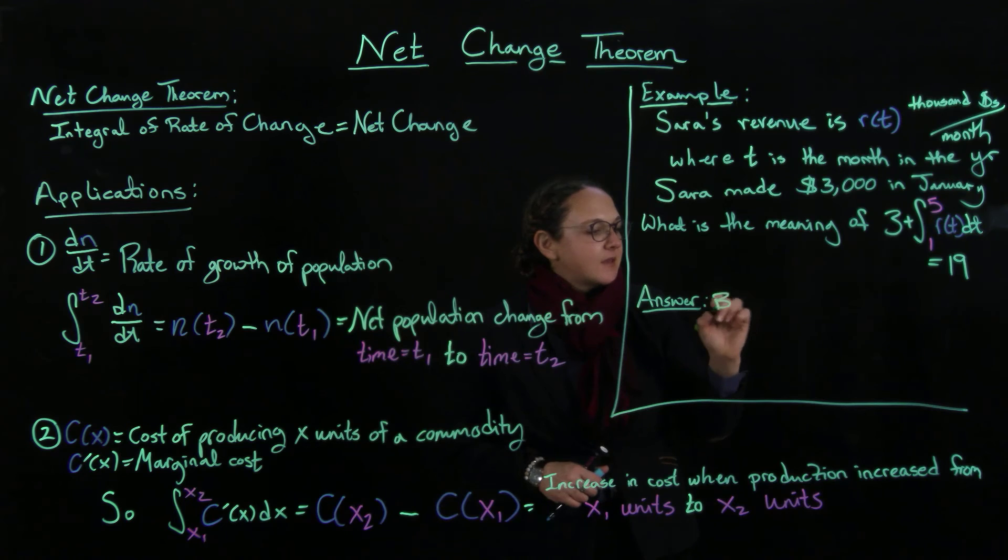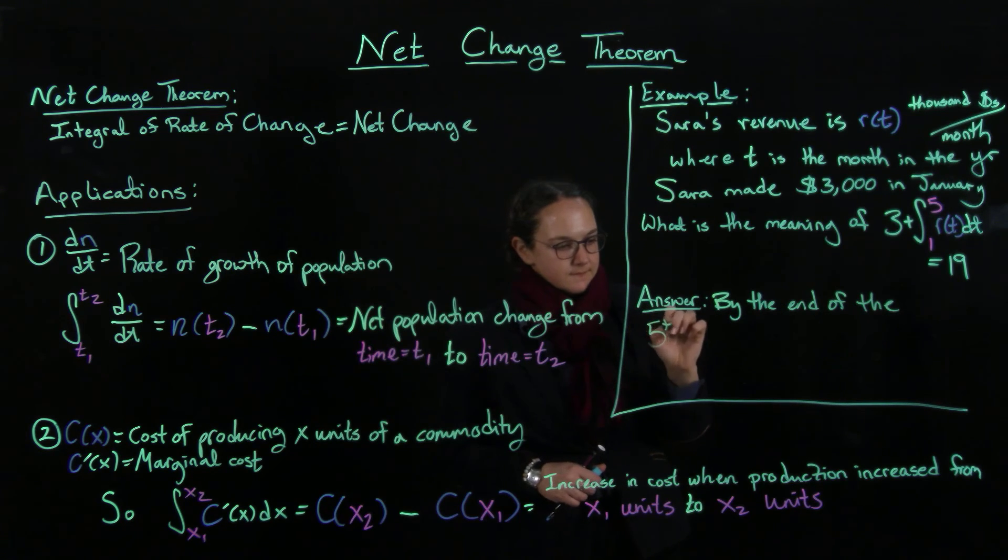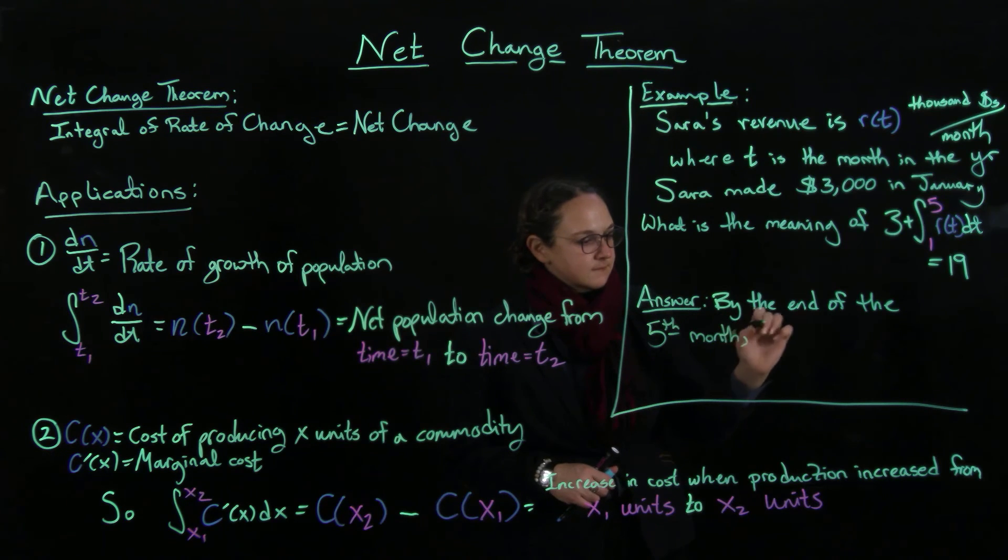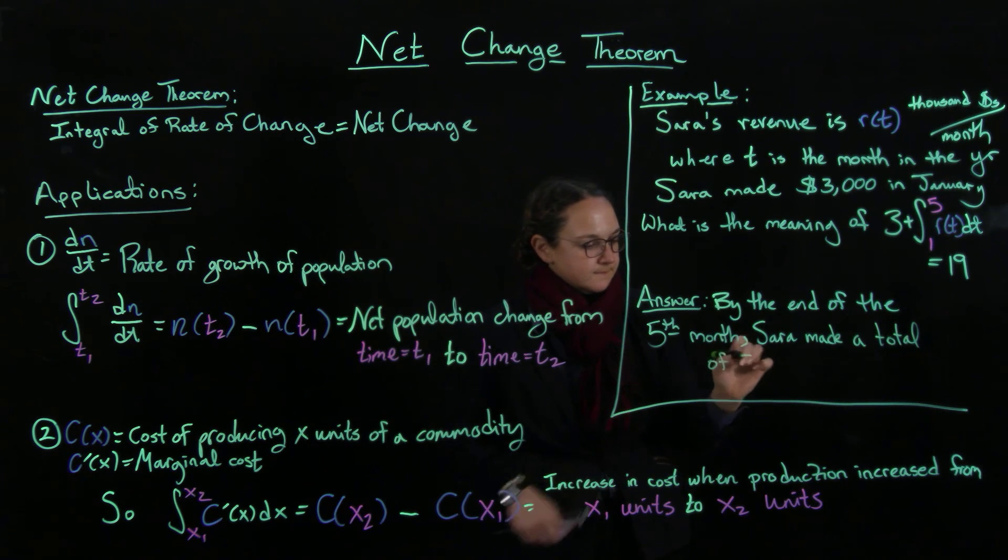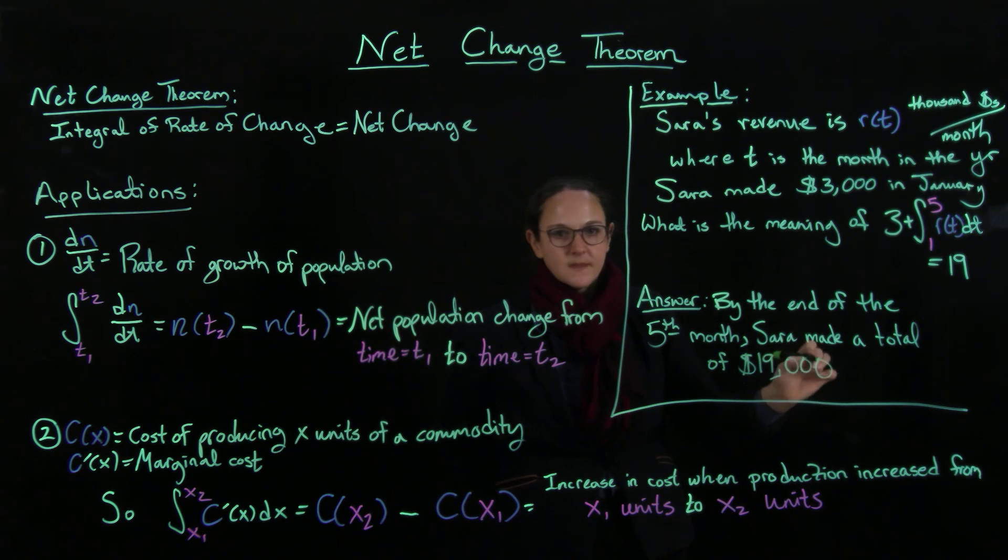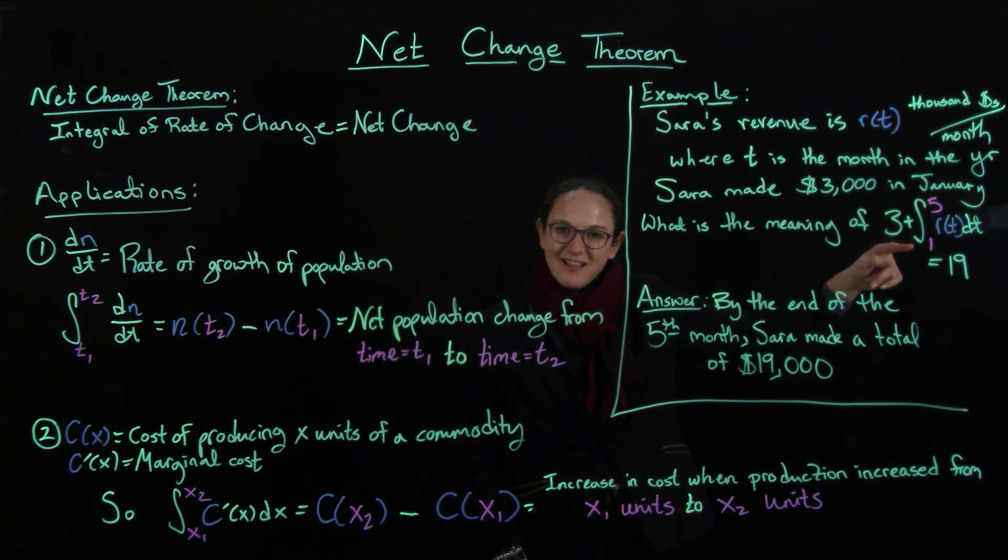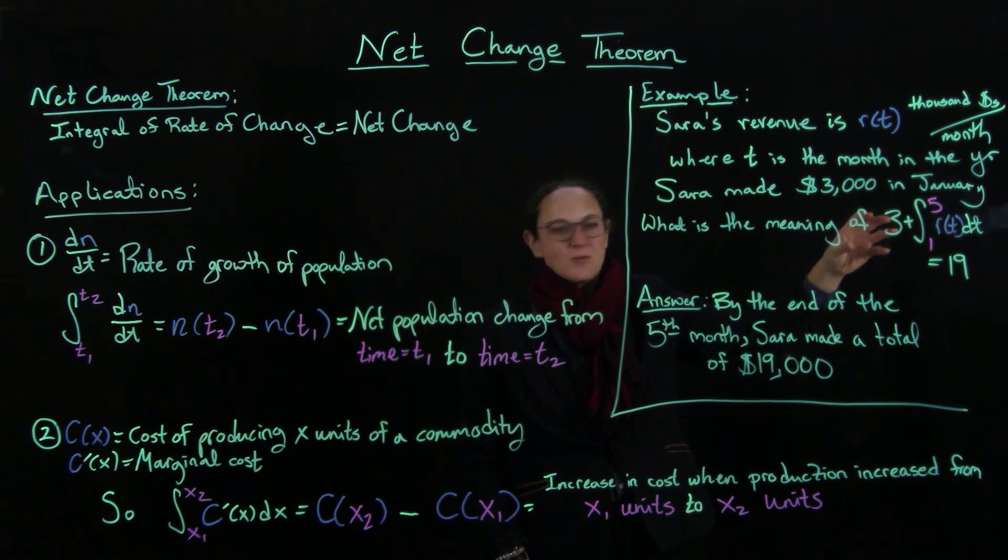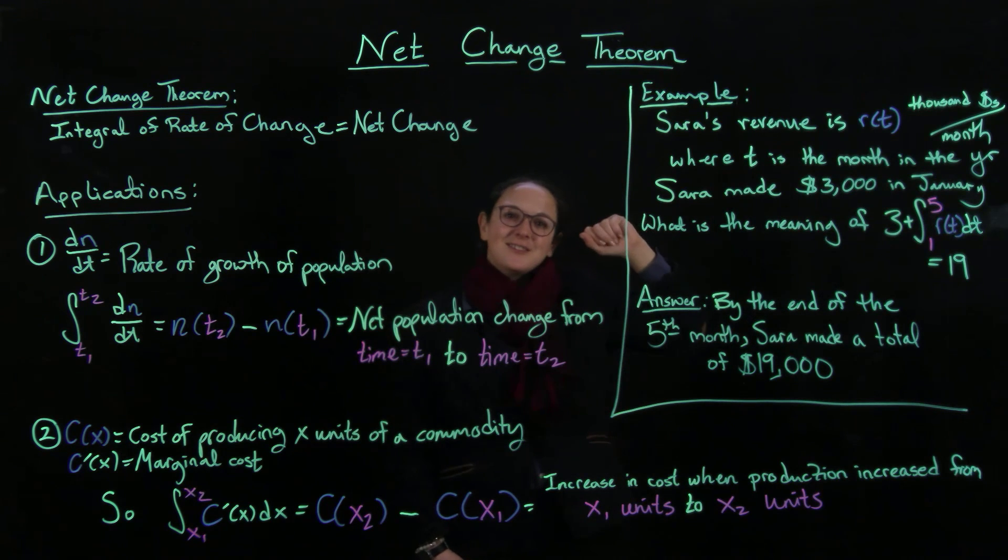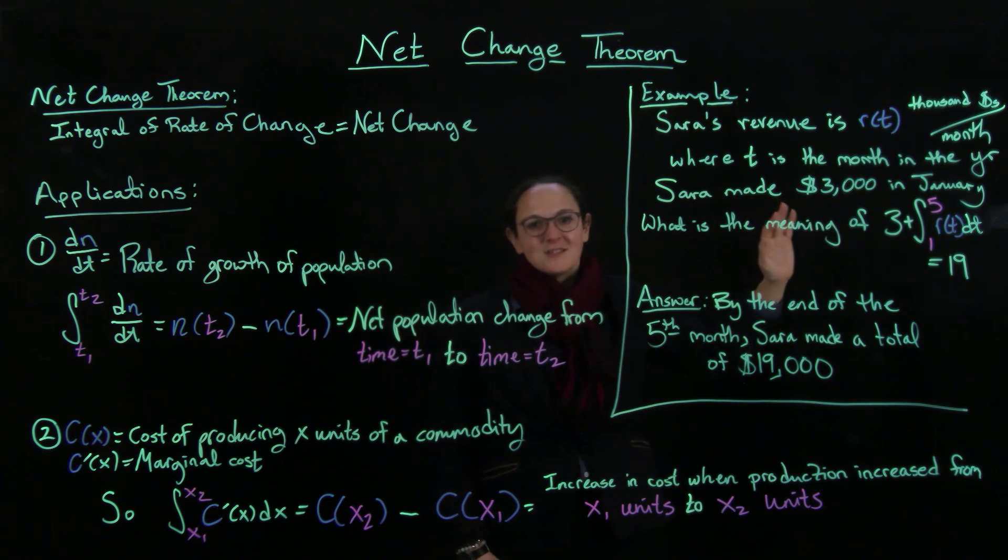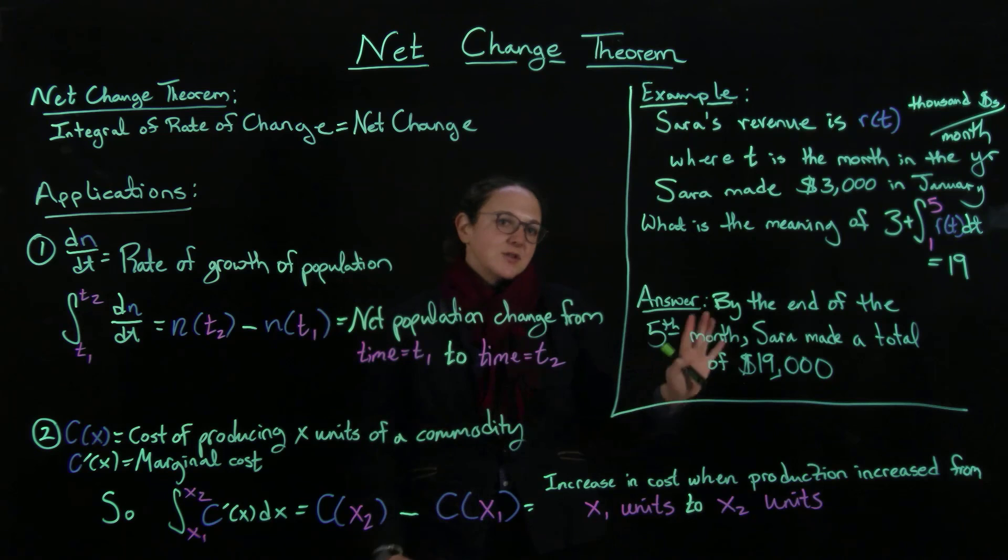Okay, so the answer is by the end of the fifth month Sarah made a total of nineteen thousand dollars. So why do we say this? Even though we started at 1, the thing was is that we encapsulated what happened in the first year. So from 0 to 1, we encapsulated that in the 3. So if you added 3 to what happened between time 1 to time 5, you're going to get 19. And this is also, I thought, I like this example because it makes you sort out what was really meant by the times in there and so on.